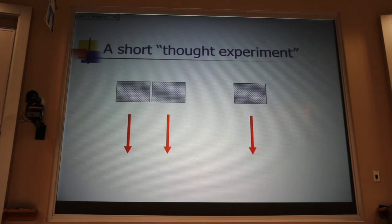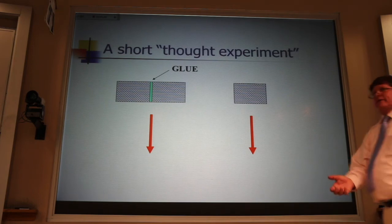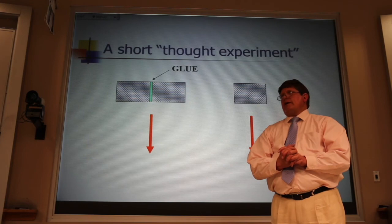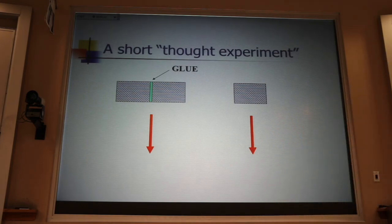And then he argued that if a spider were to spin a web between those two, or if we were to use super glue, they were moving next to each other anyway. They were always going to be side by side as they fell. What's the web going to hurt? Or what's the super glue going to hurt? And now we have a large rock and a small rock, and they land at exactly the same time.